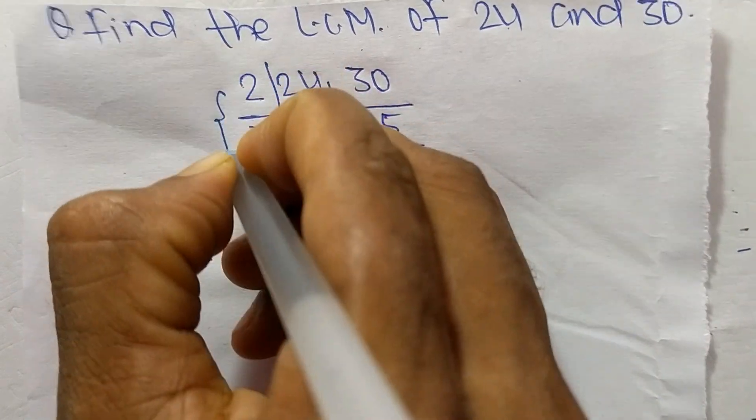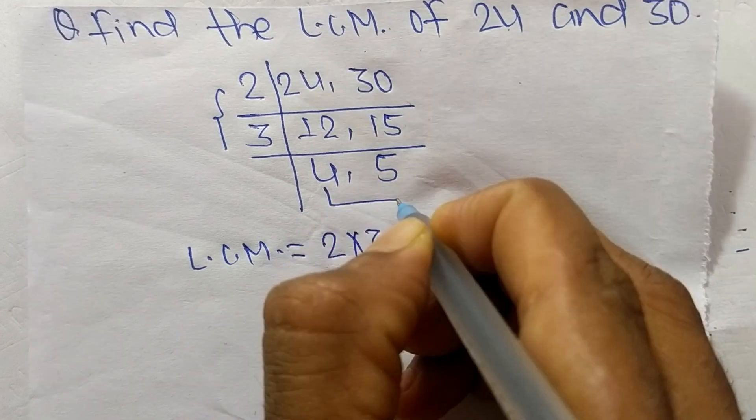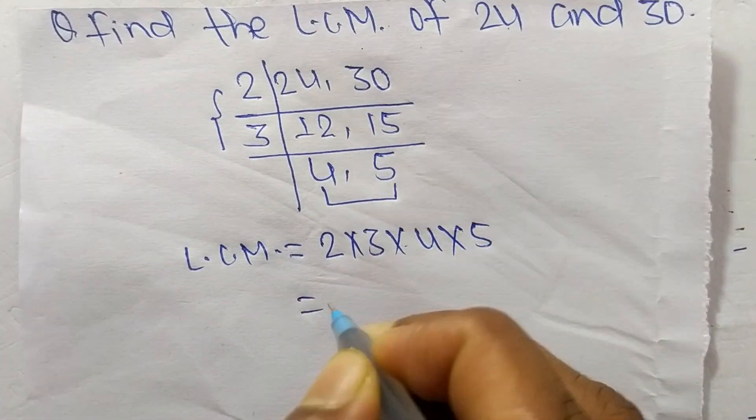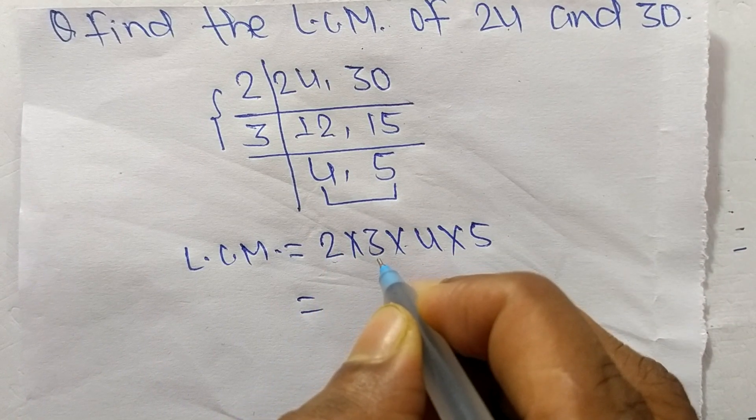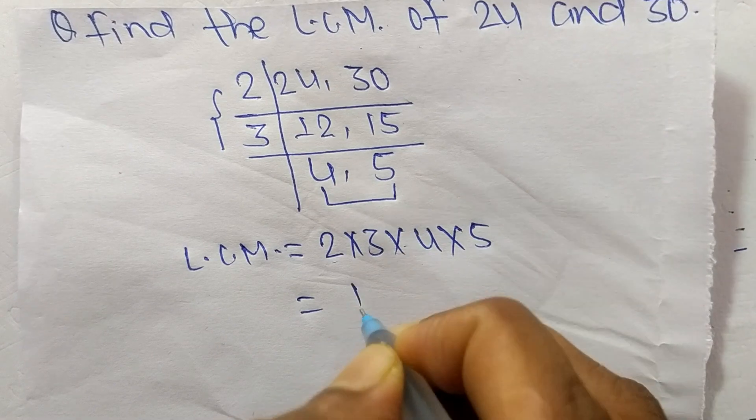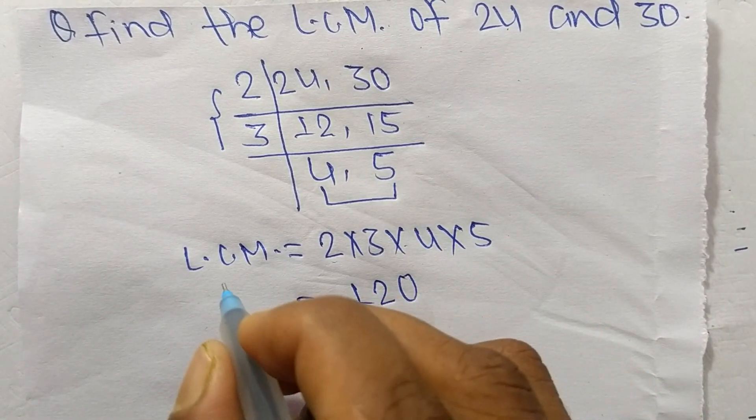From this part it is 2 times 3, from this part it is 4 times 5. So 2 times 3 means 6, 6 times 4 means 24, 24 times 5 means it is 120. So 120 is the LCM of 24 and 30.